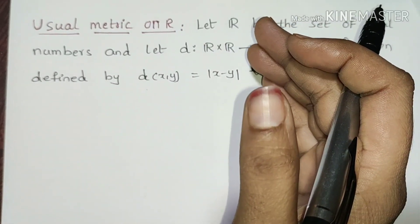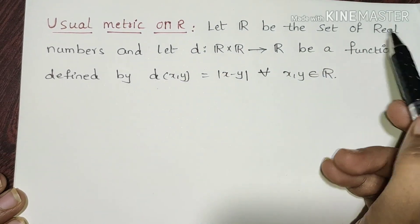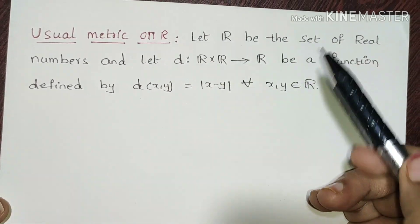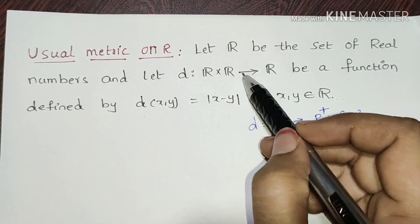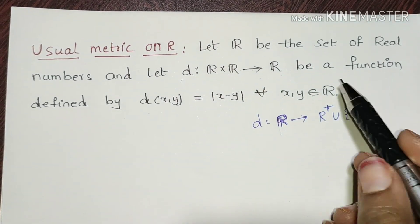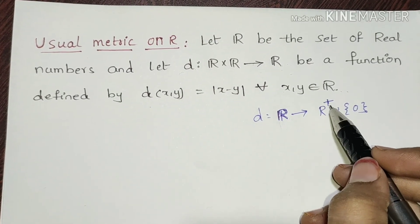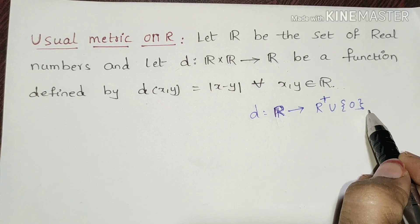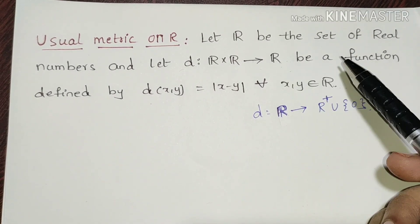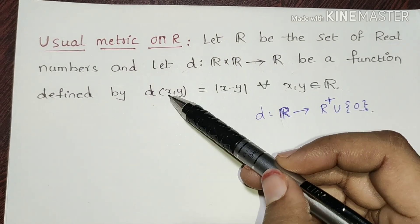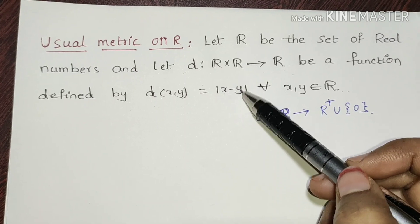Let R be the set of real numbers. This is a mapping from R cross R to R — the distance function of real numbers. We define the distance of x, y as equal to modulus of x minus y.